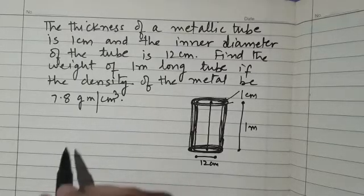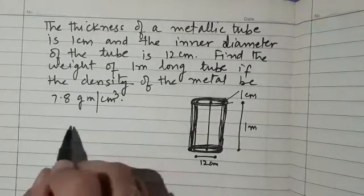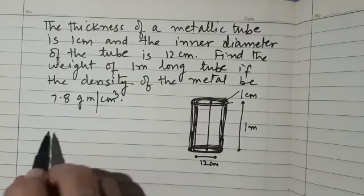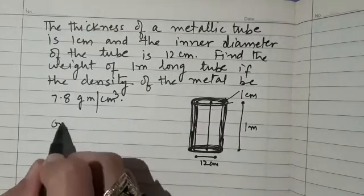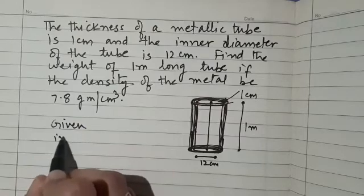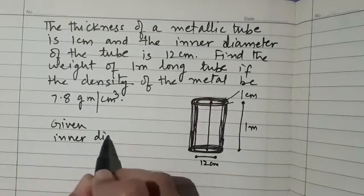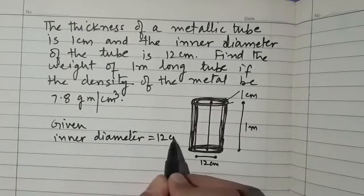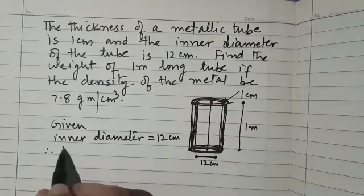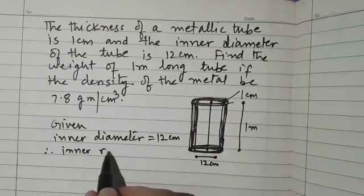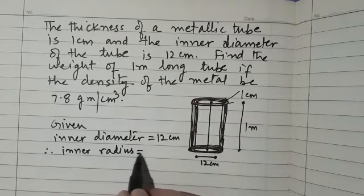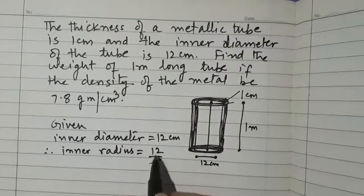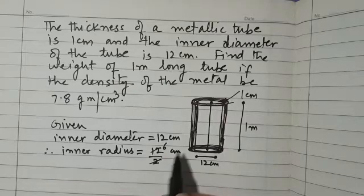So let us solve this. First we are going to find out the inner radius. I am writing given: inner diameter is equal to 12 centimeter. Therefore the inner radius will be 12 upon 2, that is 6 centimeters.